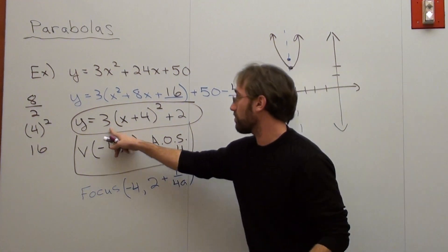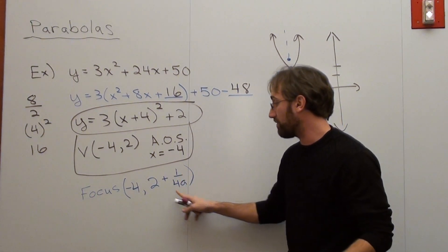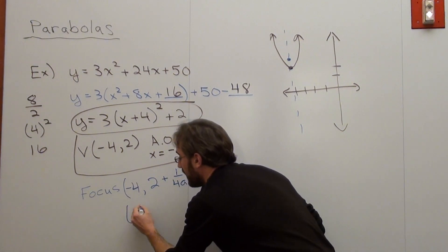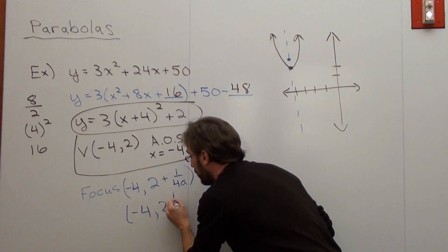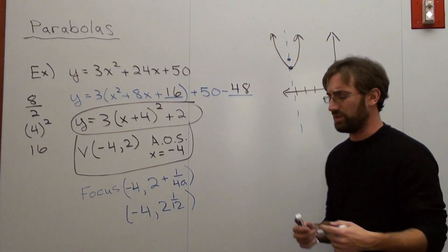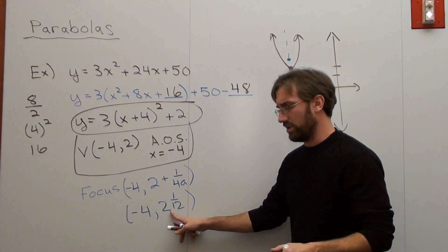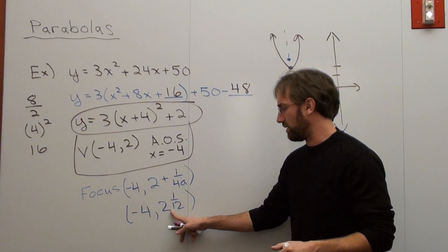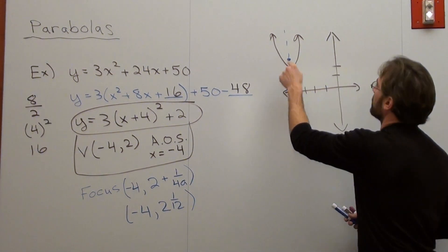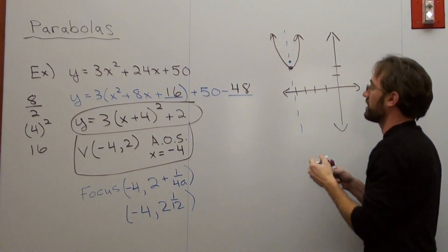Well, my A term is 3. So it's 2 plus 1 over 4 times 3, which is 1 twelfth. So it's 2 and 1 twelfth. So my focus is at negative 4 and 2 and 1 twelfth, which comes out to 25 twelfths if you're doing it as an improper fraction. If you want that as a decimal, 1 twelfth comes out to 2.083 repeating. So my focus is here. So actually that's a little too high. My focus is there.